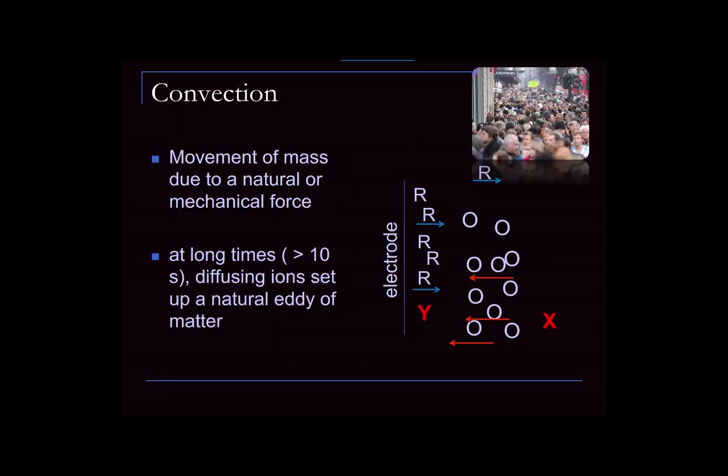The third mode of mass transport is convection. I always think of my childhood in New York City — you have all these people diffusing to work at the beginning and end of the day, and I have a strong memory of my parents and I trying to move in one direction but being carried along by the natural eddy of all the New Yorkers headed off to work. That's convection. When you have diffusion, diffusion sets up a natural eddy or flow of matter in a particular direction, and other things end up being carried along with that material. So a species X in bulk solution can be carried along by the eddy created as O diffuses to the electrode surface.